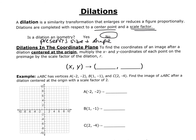Dilations in the coordinate plane. To find the coordinates of an image after a dilation centered at the origin, multiply the x and y coordinates of each point on the preimage by the scale factor of the dilation. We're going to use r as our variable for that, so if we start with (x, y), our rule gives us (x·r, y·r).